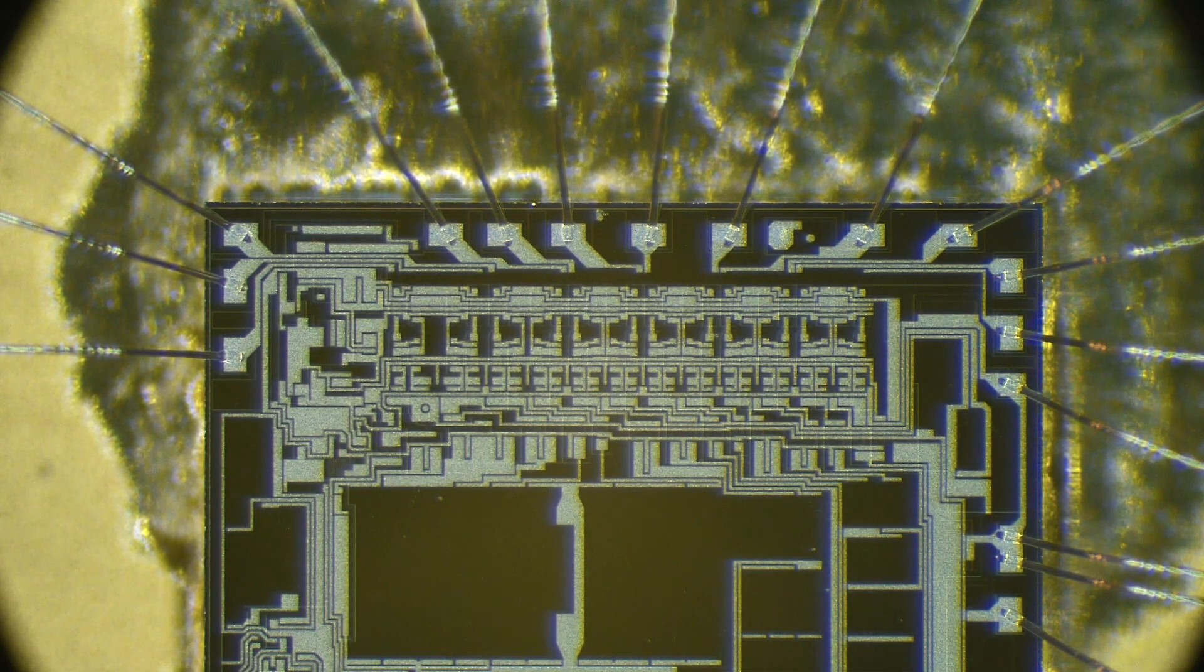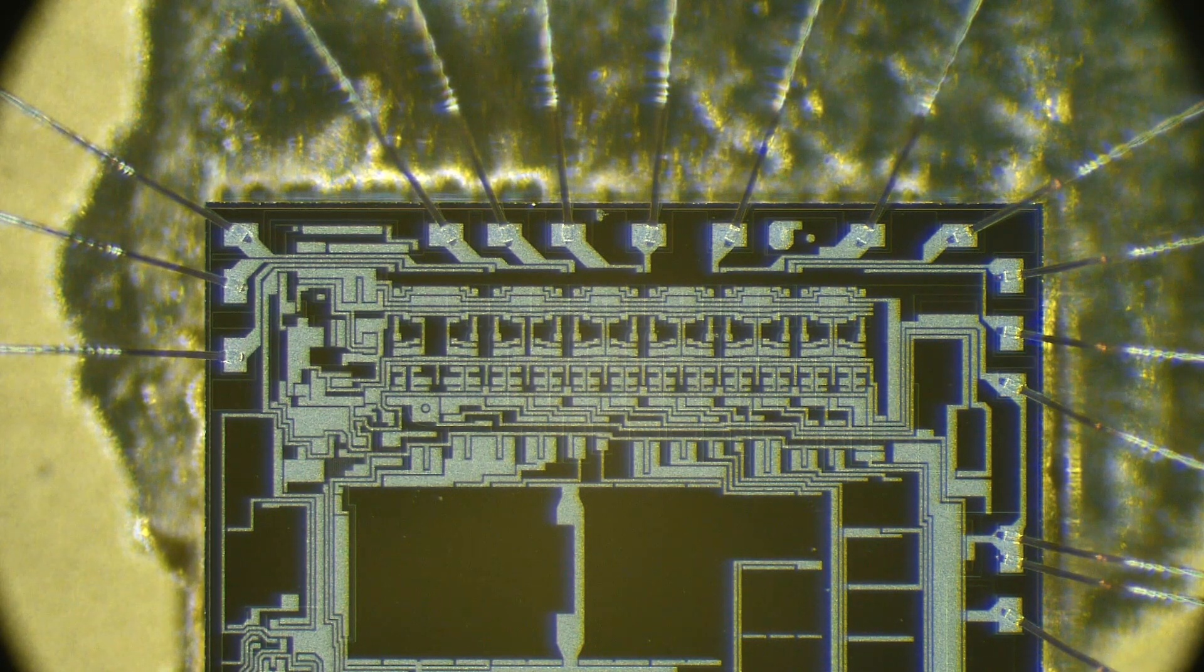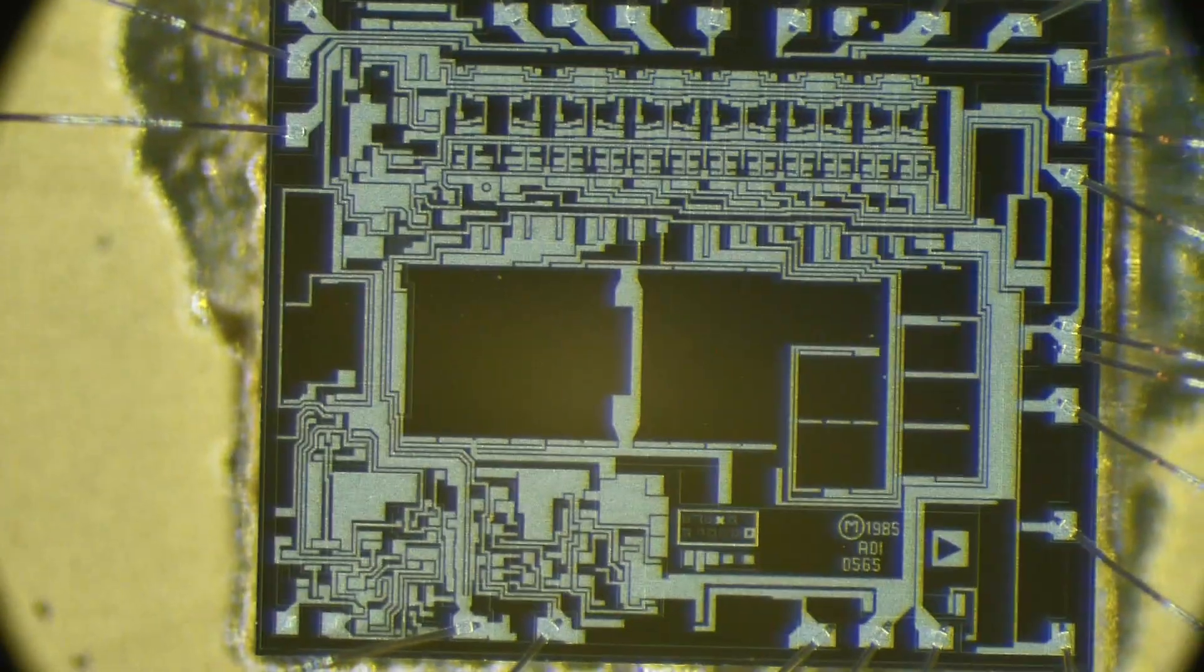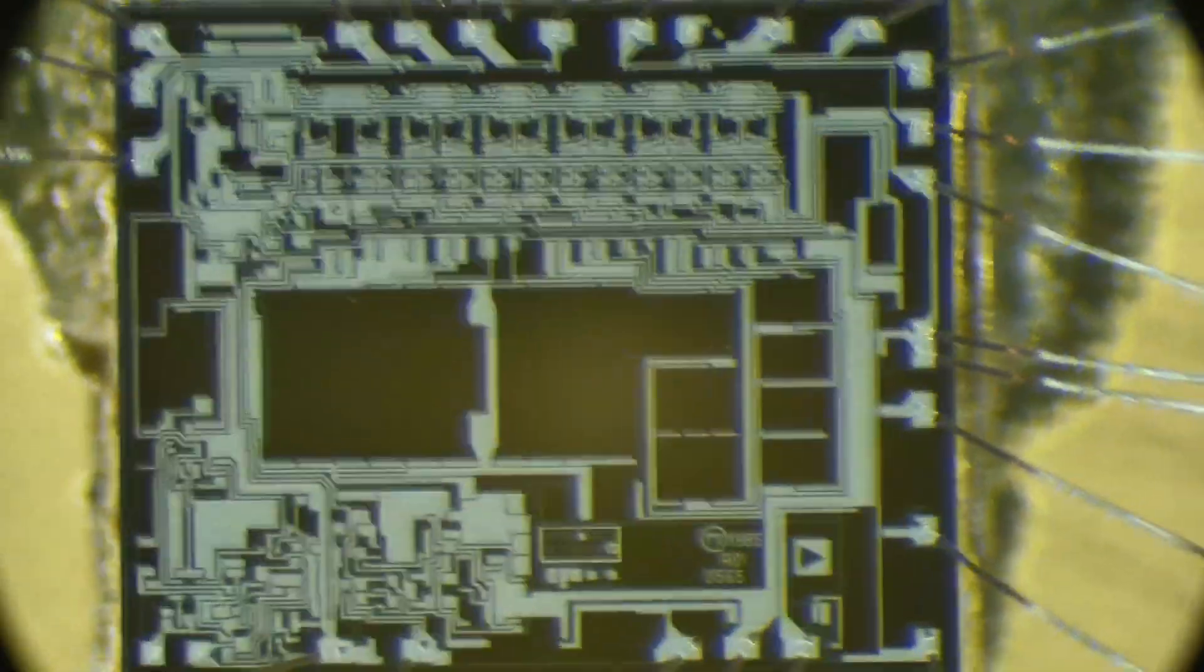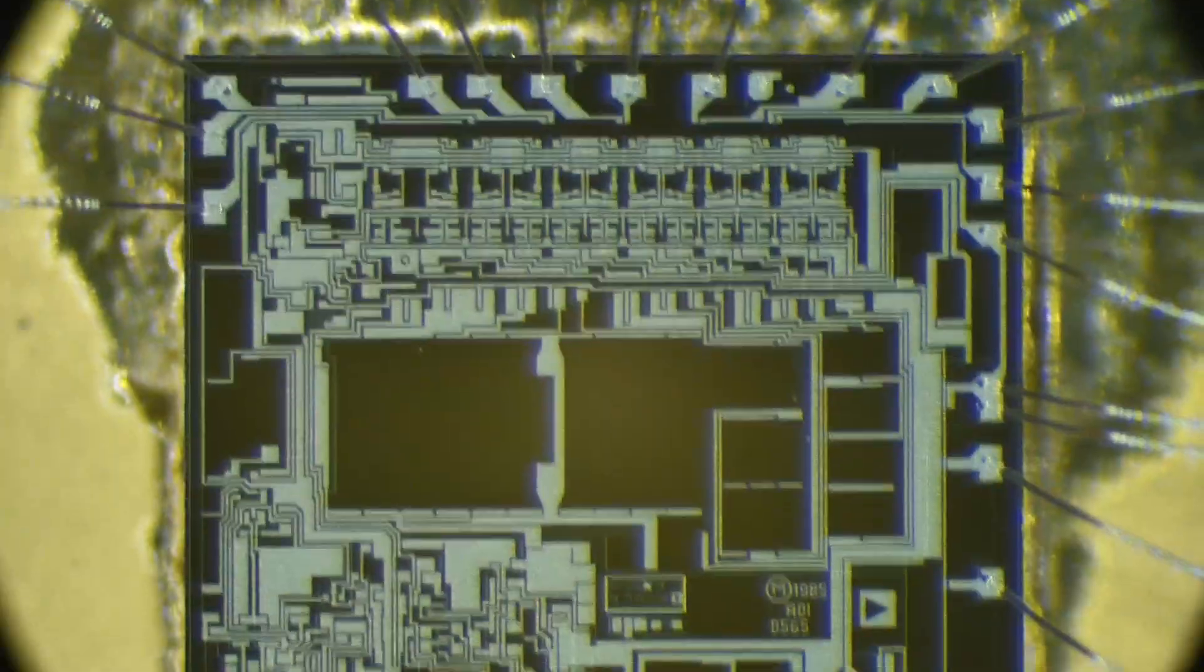It does a binary summation into a voltage and then outputs it. It sums into a capacitor, I think. Those big black areas there, I think those are capacitors. And then there's a little op amp type driver section on this bottom corner here.